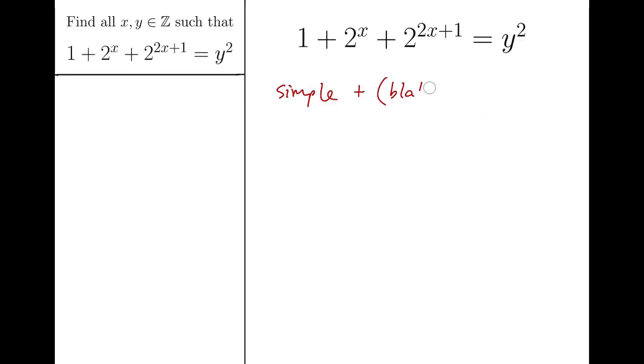Secondly, the left-hand side is a quadratic expression about 2 to the x. This term can be rewritten as 2 times 2 to the x whole squared, which makes the left-hand side look like a quadratic expression about 2 to the x. So it should be quite easy to achieve what I said just now.